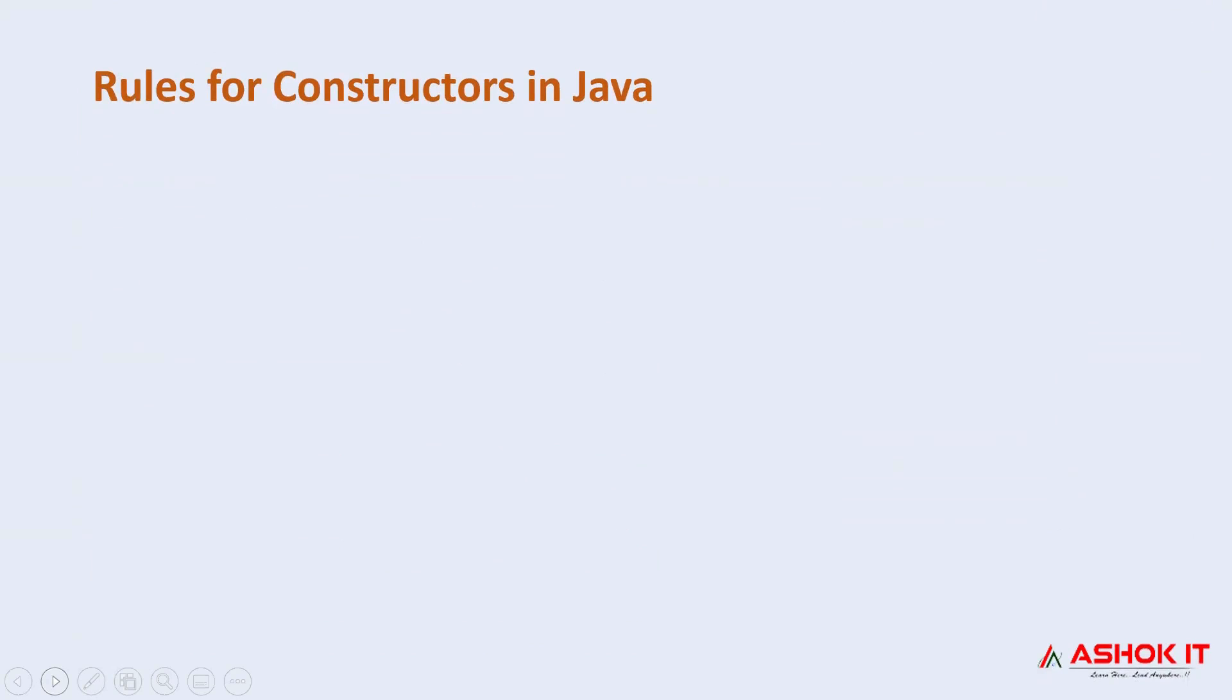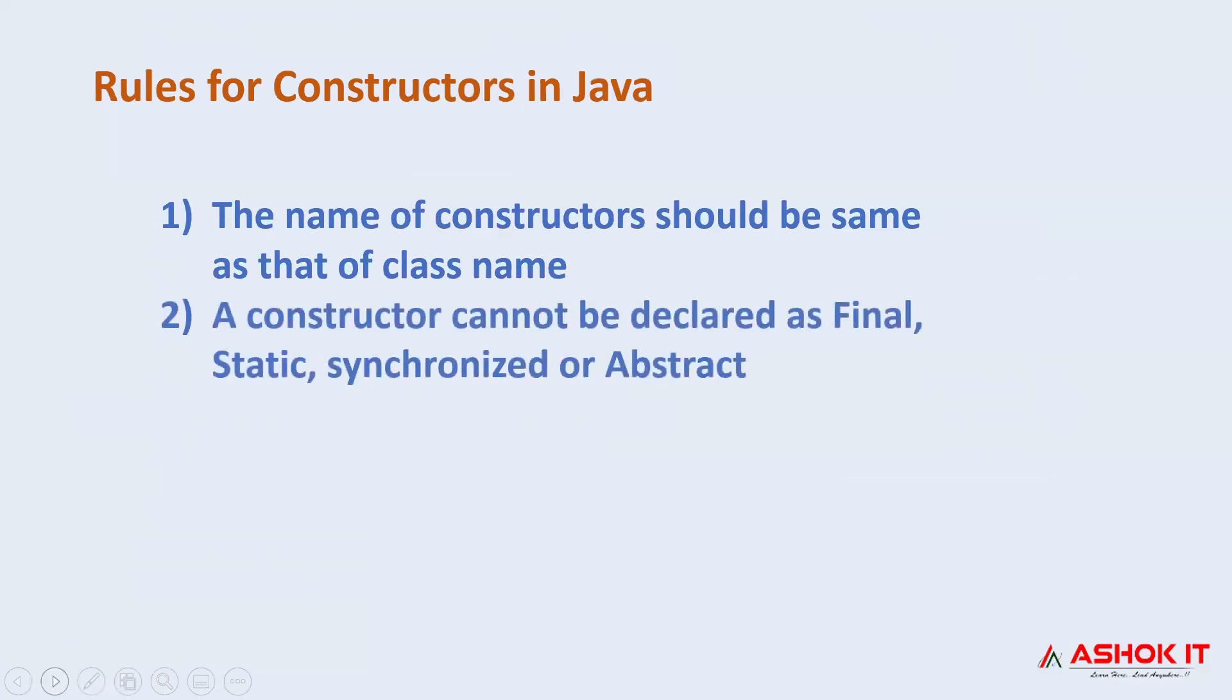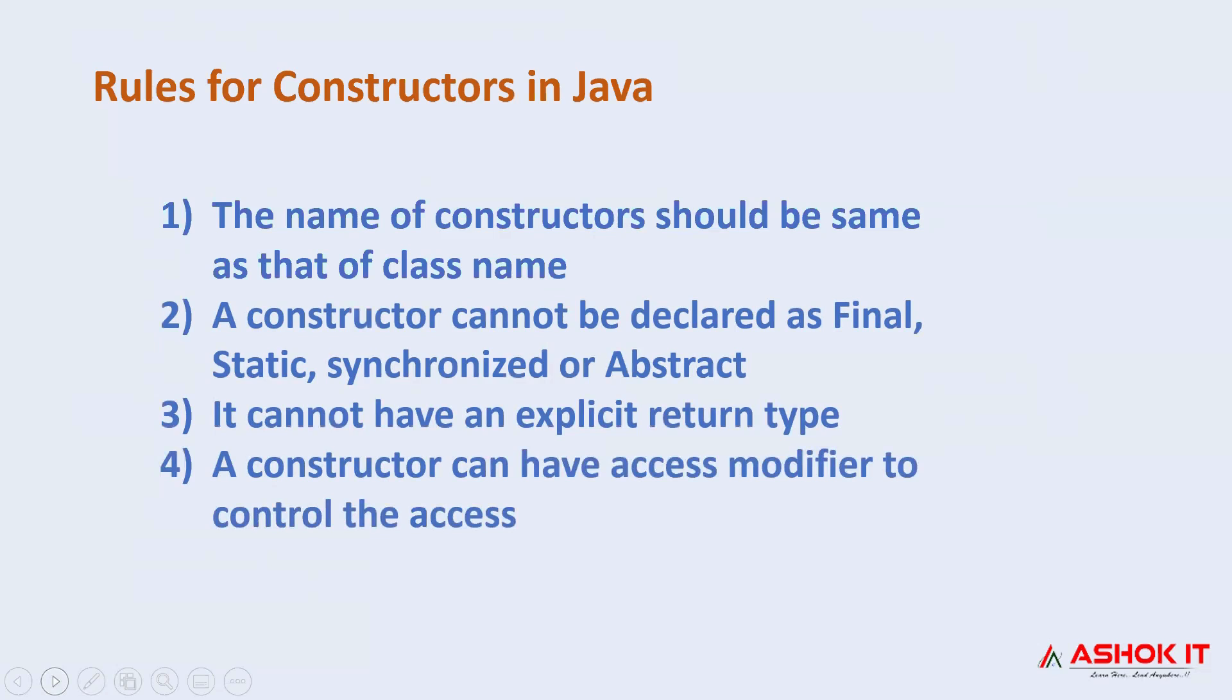There are four basic rules to use constructors in Java. First, the name of the constructor should be same as the class name. Second, the constructor cannot be declared as final, static, synchronized, or abstract. Third, it cannot have an explicit return type. And lastly, a constructor can have access modifiers to control the access.